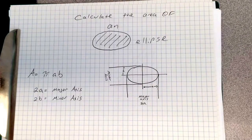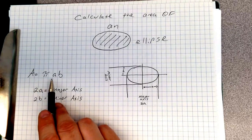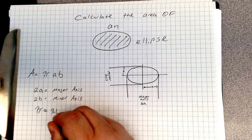Now let's look at this right here. This is the equation that you need to know. Area equals pi times a times b. You know that pi already equals 3.14.